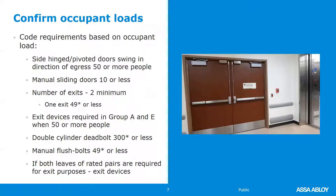How can you tell if both leaves are required for exit purposes? That's based on the occupant load. A three-foot-wide door hung on butt hinges, pivots, or continuous hinges has 33 inches of clear opening space. Based on a table in Chapter 10 of Means of Egress, a three-foot door can exit 165 people in a non-sprinklered building. If you have more than 165, you'll have to use both leaves of the pair of doors for egress purposes.